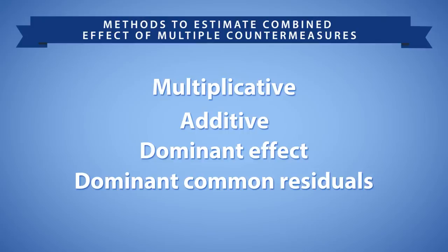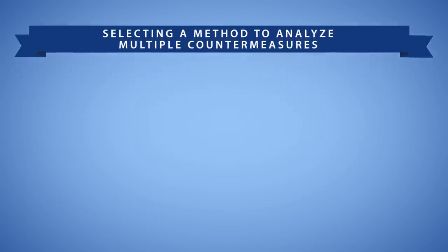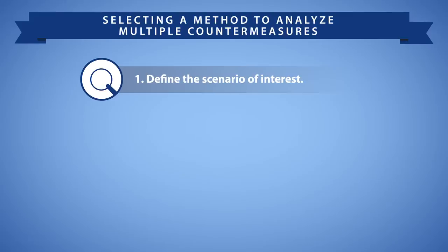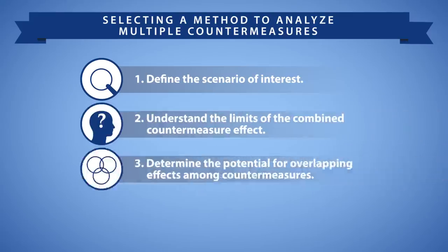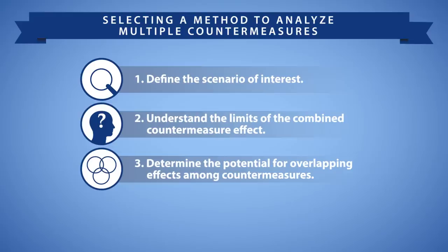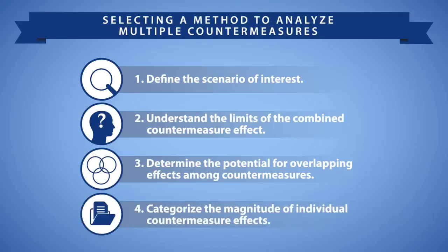So when would you select one method over another? In this video, you will learn how to select an appropriate method by completing the following steps: define the scenario of interest; understand the limits of the combined countermeasure effect; determine the potential for overlapping effects among countermeasures; and categorize the magnitude of individual countermeasure effects.